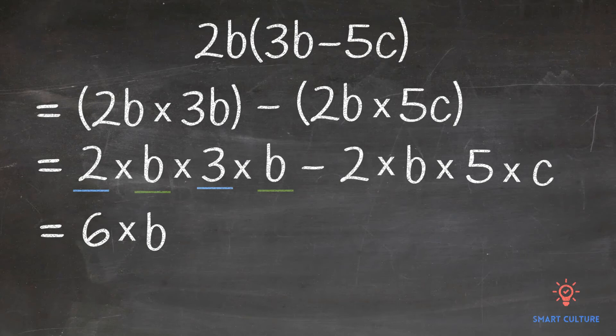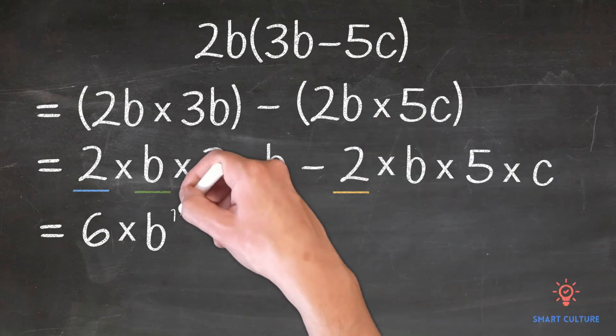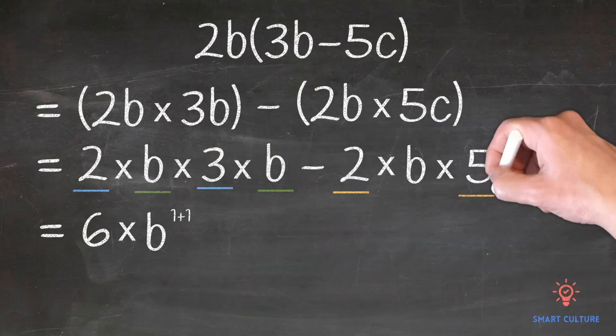Remember, a negative times a positive equals a negative. So negative 2 times 5 is equal to negative 10. b times c is equal to bc.